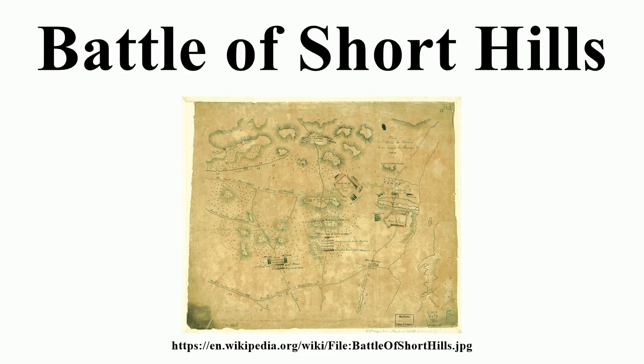On June 14, Howe's army marched again, its destination Somerset Court House. Apparently seeking to draw Washington into battle on open terrain, Howe remained there five days. Washington refused to move out of the hills, and on June 19 Howe began the march back to Perth Amboy, which he reached on June 22, having completely evacuated New Brunswick. After refusing to fall for Howe's trap, Washington followed the retreating British, bringing his army down from Middlebrook to Quibbletown, and sent a strong forward detachment under Brigadier General William Alexander to the Scotch Plains area north of New Brunswick, to cover his left flank and to harass the British.